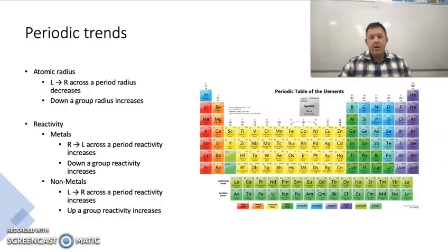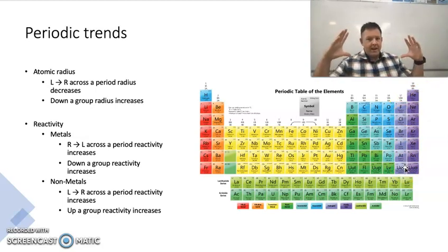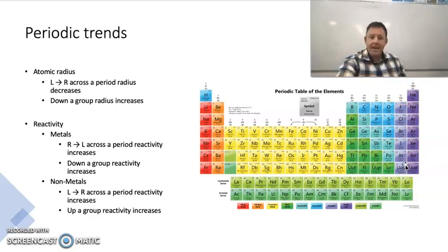We then went on and had a look at periodic trends. A bit of a brief overview of these. Atomic radius: as you're going left to right across a period, your atomic radius decreases. They get smaller. There's more protons, more positive charge, so it draws those valence electrons in closer. As you go down the group, you've got more electron shells, so your radius increases and your atoms get bigger.